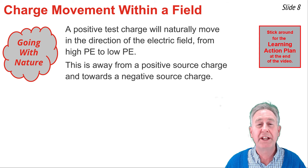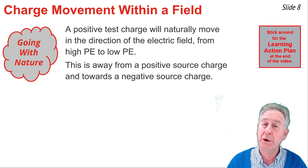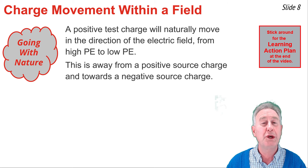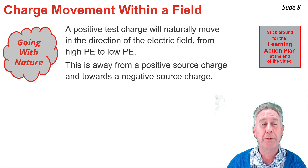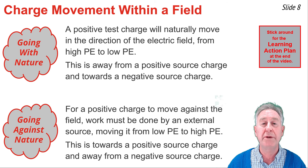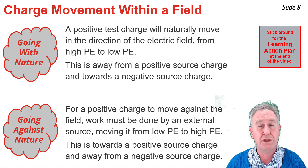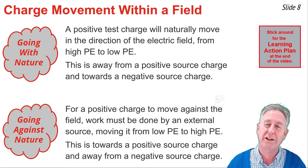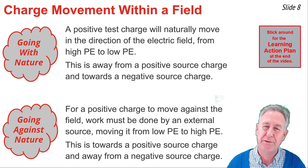To summarize the movement of an electric charge within an electric field, there are two general types of motion. First, movement in the direction of the electric field — going with nature. It occurs naturally, no external force required, analogous to moving downhill, corresponding to a positive test charge moving away from a positive source or towards a negative source. Second, movement against the electric field — going against nature. It requires an external force to do work, moving the charge from low-potential energy to high-potential energy, corresponding to a positive test charge moving towards a positive source or away from a negative source.